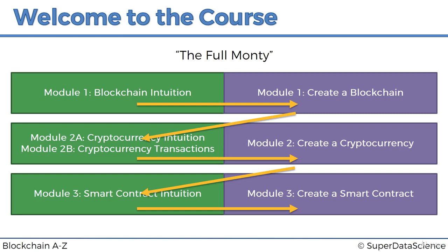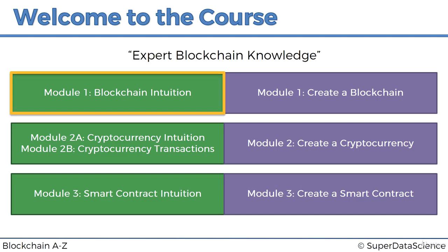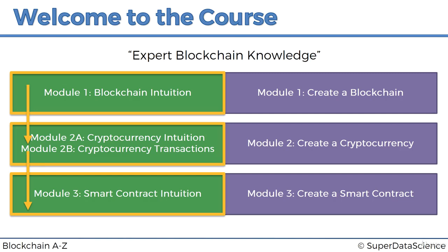You might have a different goal for this course. Your goal might not be to become a blockchain developer — you might not want to code, and that's totally fine. If you're taking this course to learn about blockchain and maybe start a consulting business, apply blockchain in your own work, or develop some sort of strategy for your business, and you don't really want to code, that's totally fine too. In that case, you could take the blockchain expert knowledge path through the course and simply go through Module 1 intuition, Module 2 intuition, and Module 3 intuition, completely disregarding the coding aspects.